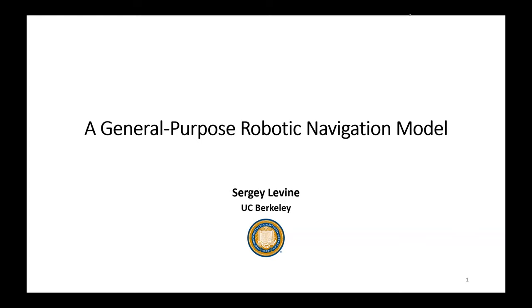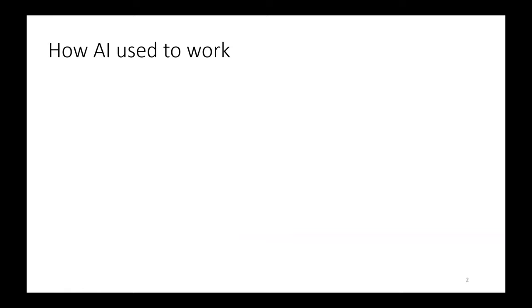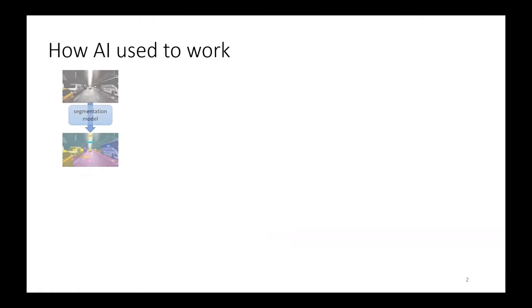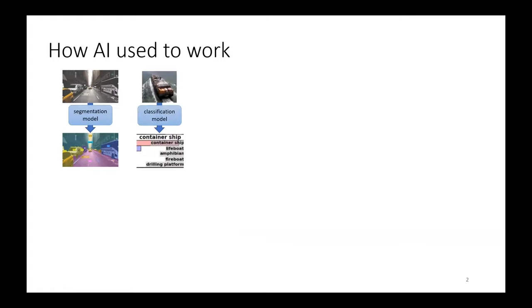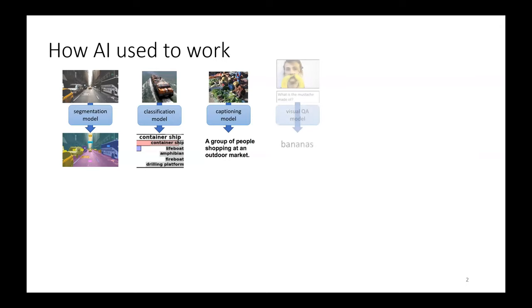I'm building a general purpose robotic navigation model. So let me start off with a little bit of motivation. It used to be that if we wanted to build a computer vision system to construct a segmentation, an image classifier, or image captioning, we would train separate models for each of these things. We would require fairly large labeled datasets for each domain to get a corresponding model that would address that domain.